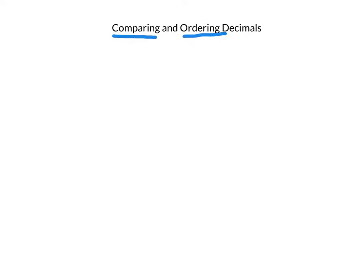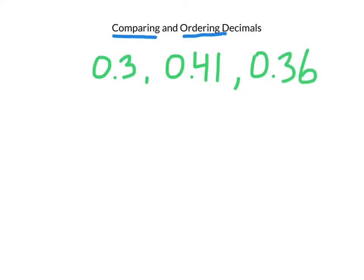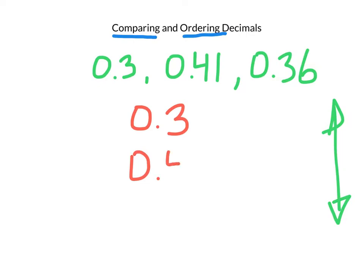Let's say we have these three decimals: 0.3, 0.41, and 0.36. In order to compare these, we should do one thing that's really important — we should write them vertically, up and down, and always line up the decimals. So I'm going to write them vertically: 0.3, 0.41, 0.36.